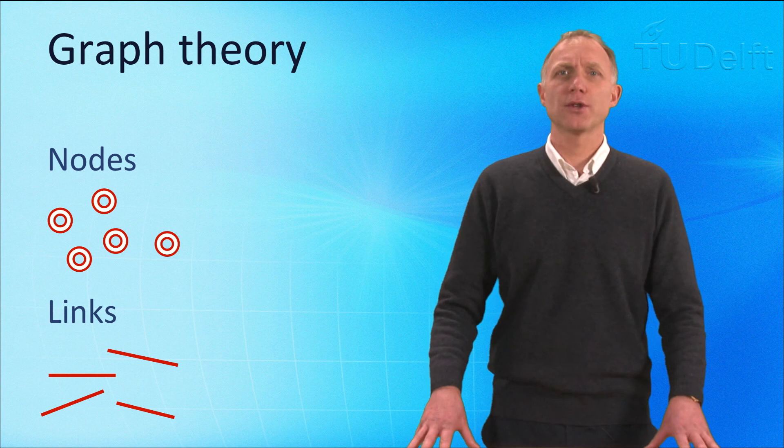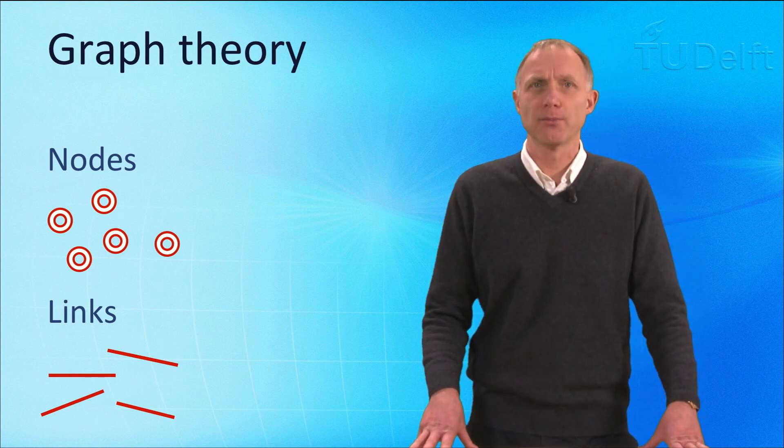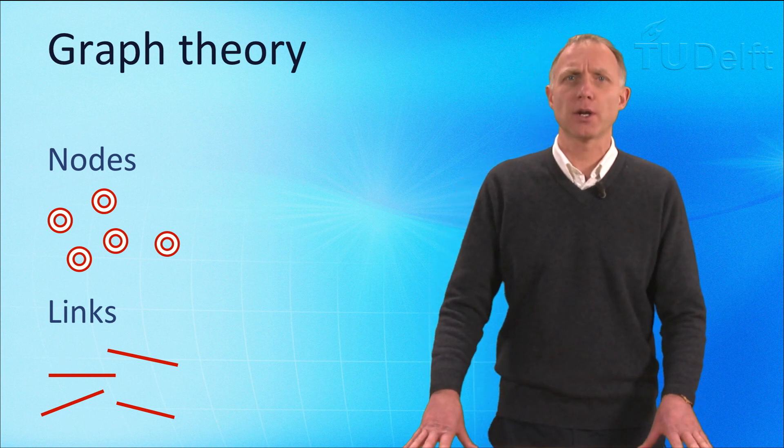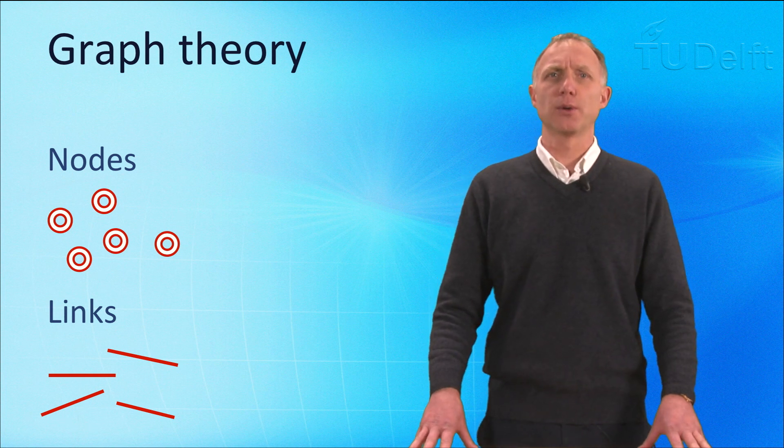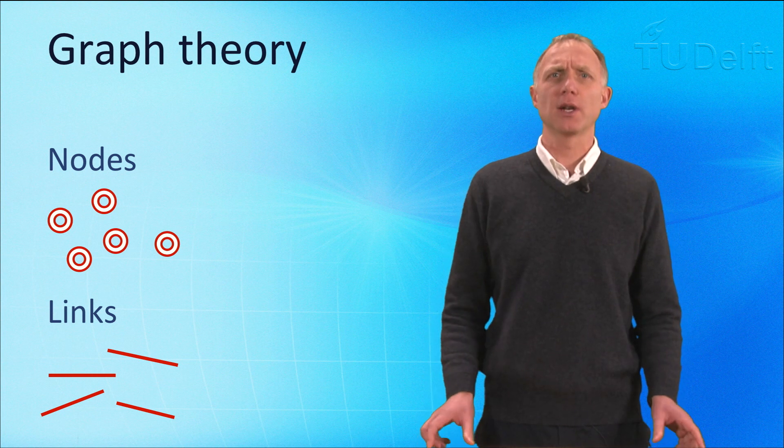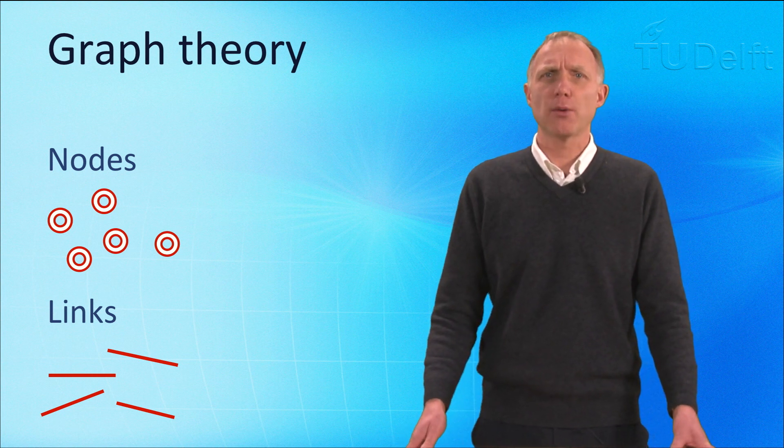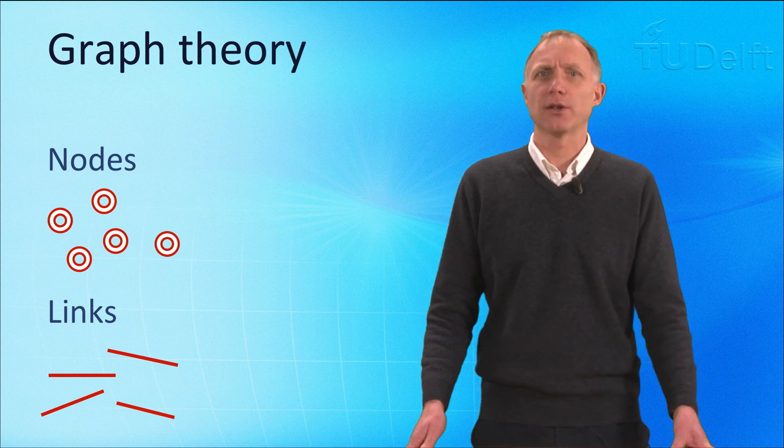A graph consists of a set of N nodes and a set of L links. For example, an airport is a node in an aviation network and the links represent the air routes. Nodes in traffic networks are train or bus stations. Correspondingly, roads and rails are the physical links. Also power systems are networks, in which the nodes are the power plants and substations, and the links are transmission lines.